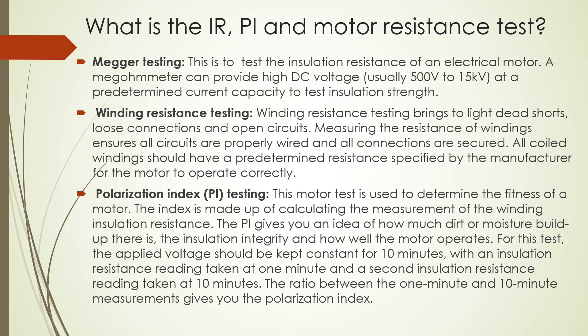Polarization Index or PI testing is used to determine the fitness of a motor. The index is calculated by measuring the winding insulation resistance. The PI gives you an idea of how much dirt or moisture has built up, the insulation integrity, and how well the motor operates. For this test, the applied voltage is kept constant for 10 minutes, with an insulation resistance reading taken at one minute and another at 10 minutes. The ratio of the one-minute to ten-minute measurement gives the polarization index.